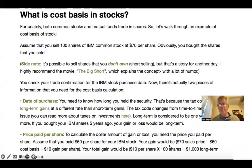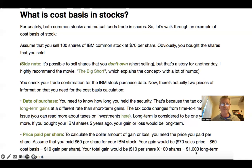Let's assume that you pay $60 a share for your IBM stock. If so, your gain would be $70 sale price minus $60 cost basis, or $10 gain per share. So your total gain would be $10 times 100 shares, which equals a $1,000 long-term gain.